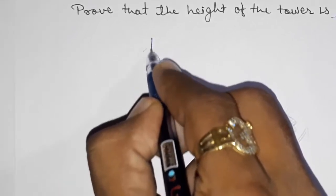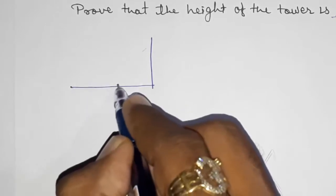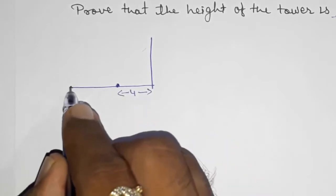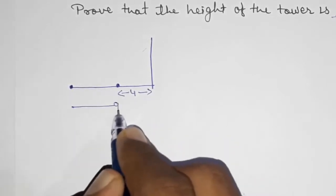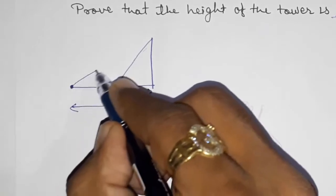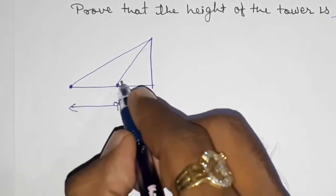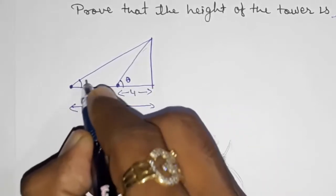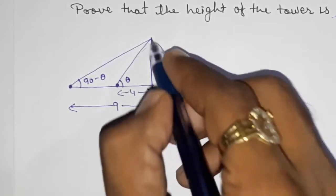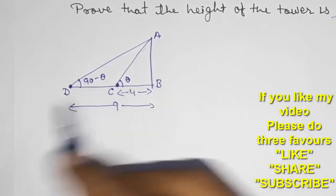Look here — this is the height of the tower. They are telling two points are there on the base: one point is at a distance of 4 meters and another point is at a distance of 9 meters from the foot. These are the two distances, and they say that the sum of these two angles are complementary. So take one as θ and take the other as 90 minus θ. Give names to the points A, B, C, and D.